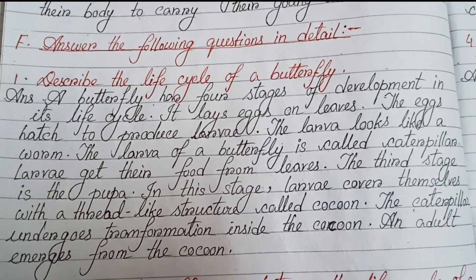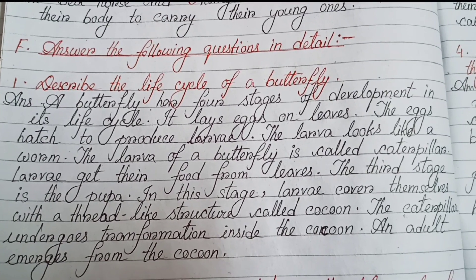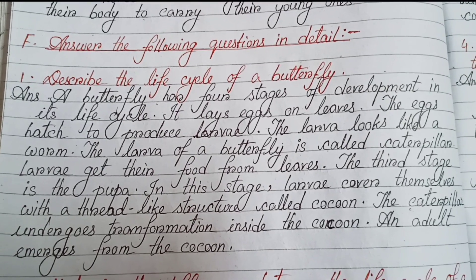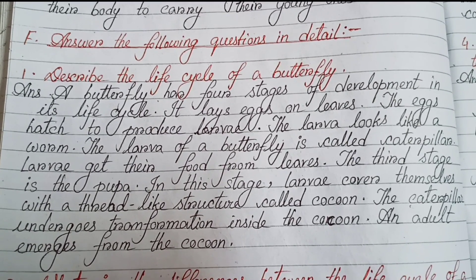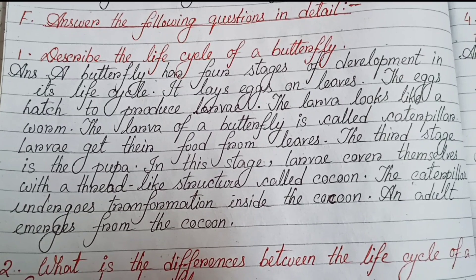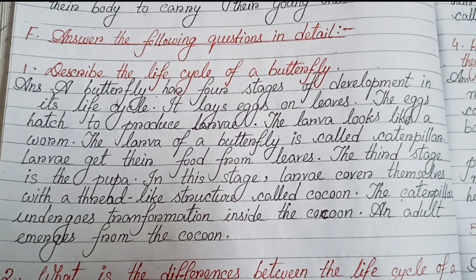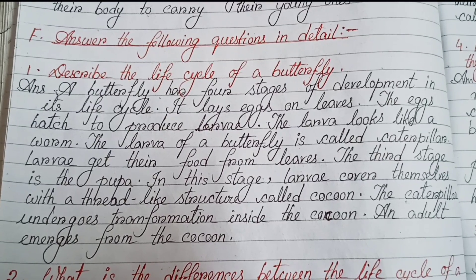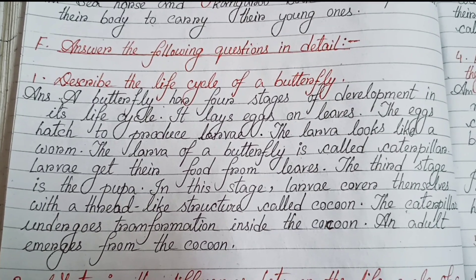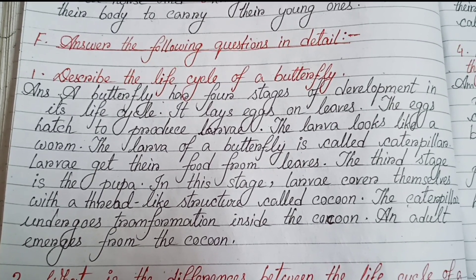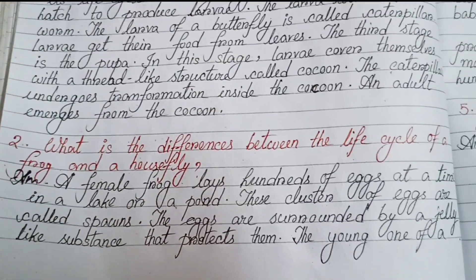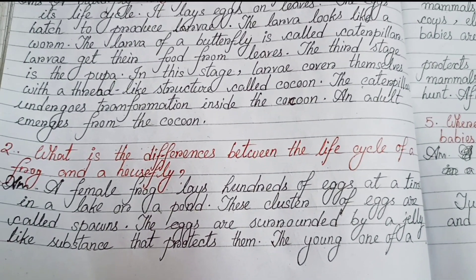Number eight, question one: Describe the life cycle of a butterfly. A butterfly has four stages of development in its life cycle. It lays eggs on leaves; the eggs hatch to produce larvae. The larva looks like a worm and is called a caterpillar. Larvae get their food from leaves. The third stage is the pupa — in this stage, larvae cover themselves with a thread-like structure called a cocoon. The caterpillar undergoes transformation inside the cocoon, and an adult butterfly emerges.